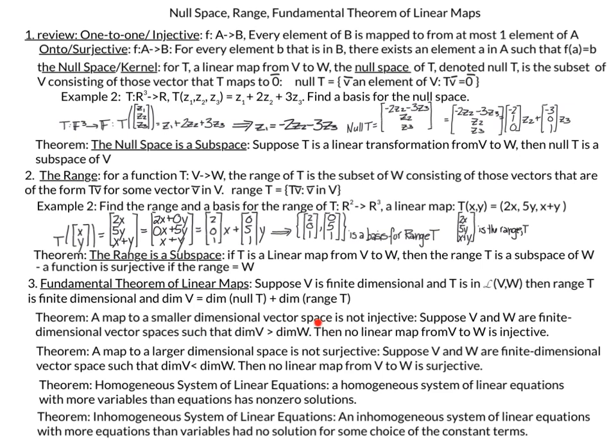These two theorems together mean that to have an injective and surjective map, the dimension of V must equal the dimension of W. Related to these, a homogeneous system of linear equations with more variables than equations has non-zero solutions, and an inhomogeneous system with more equations than variables has no solution for some choice of constant terms.